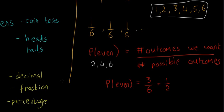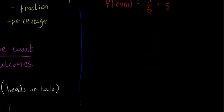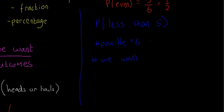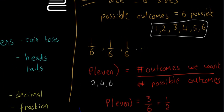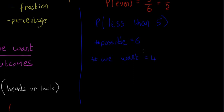One last example in dark blue: P of less than five. The number of possible outcomes is six. The outcomes we want are numbers less than five, which from our list are one, two, three, and four. So the number of outcomes we want is four. Remember the formula: probability equals the number we want over the number of possible outcomes.